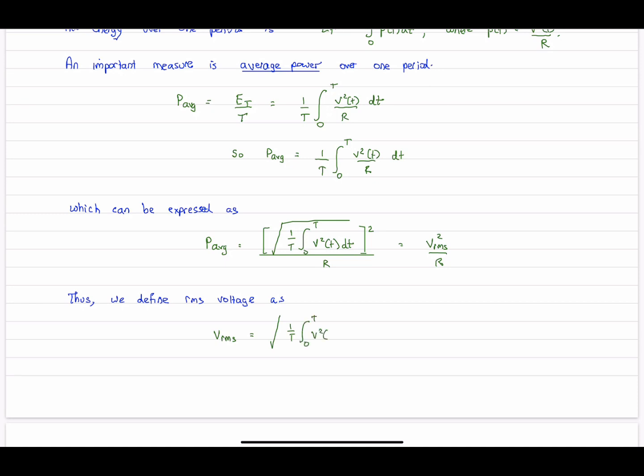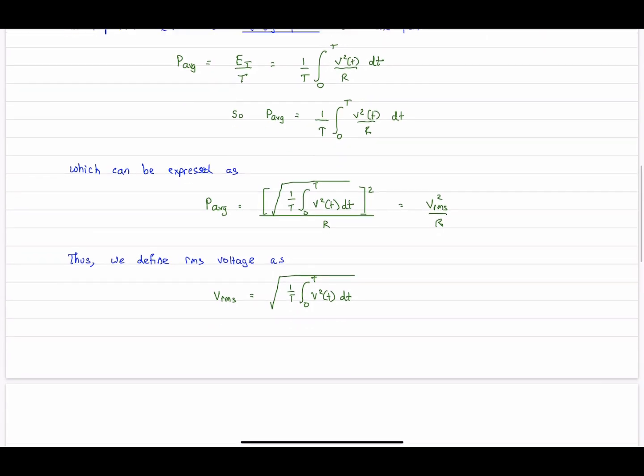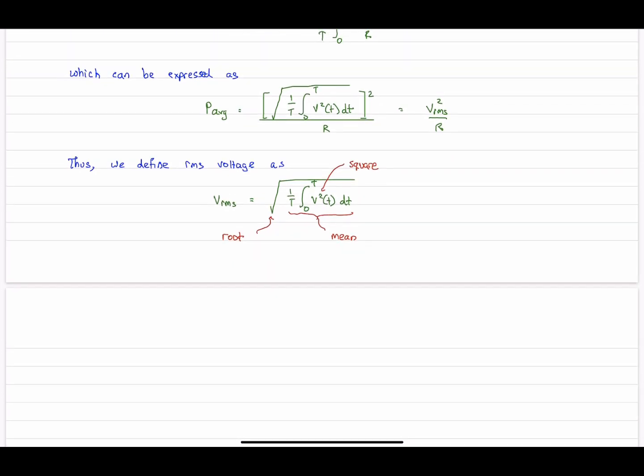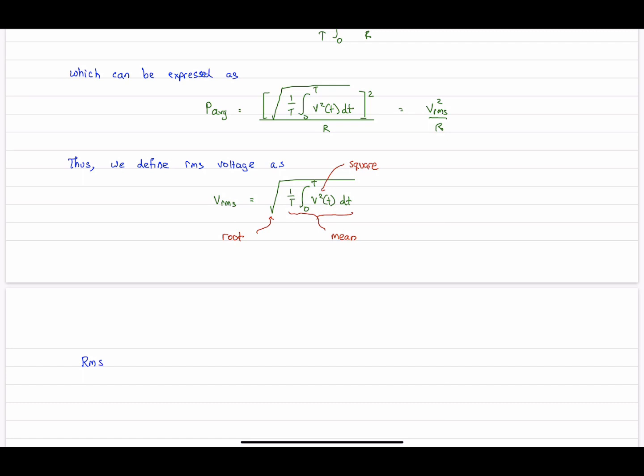So if we pull that out, this is what we have. So 1 over T times the integral from zero to T over one period, V² of t. And so then here's where the name comes from. So there's the root, which is the overall square root sign. The mean, which is essentially everything inside the square root. And the square is the square on the voltage. So RMS, root mean square.